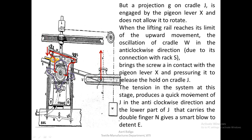The tension in the system at this point is very high, and it produces a quick movement of J in the anti-clockwise direction. The lower part of cradle J carries a double finger marked N, and because of this sudden smart oscillation, finger N will give a smart blow to detent E and try to release it from its position. Detent E will therefore release the ratchet for maybe just a few microseconds.